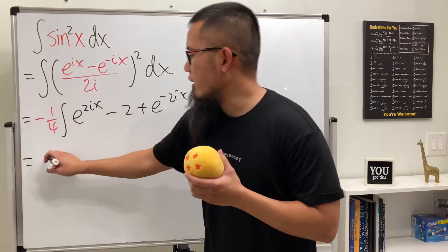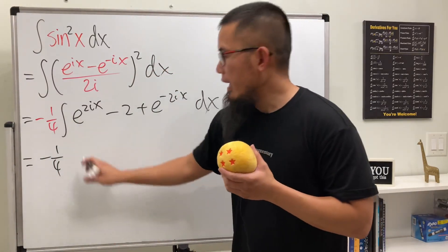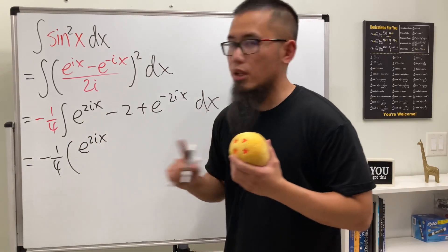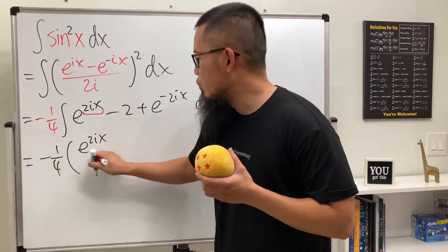Have a look right here. We do have the negative 1 over 4 all the way in the front, and then integrating this, we get e to the 2ix and use substitution, right? So we will have to divide it by 2i right here.